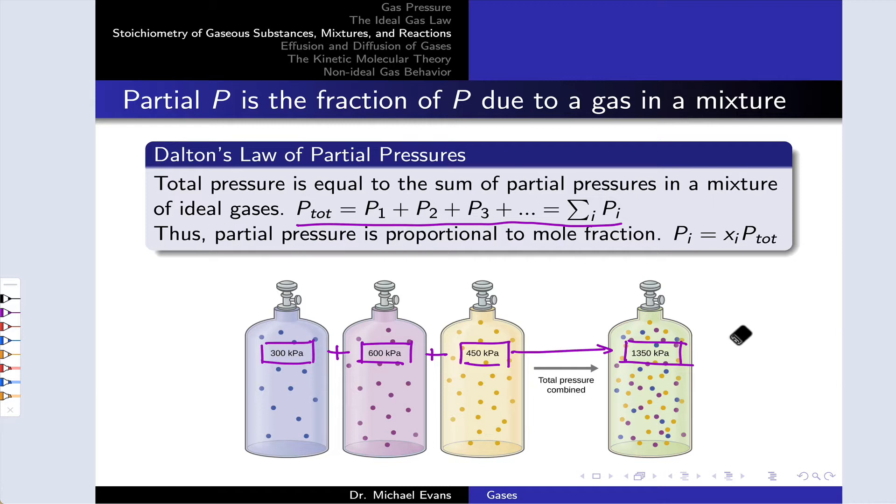A consequence of Dalton's law is that the partial pressure of a gas within a mixture is related to its molar portion within that gas, or mole fraction. We can define the mole fraction of a gas within a mixture as the moles of that gas divided by the total number of moles of gas in the mixture. The mole fraction of A is equal to its partial pressure within the mixture divided by the total pressure.